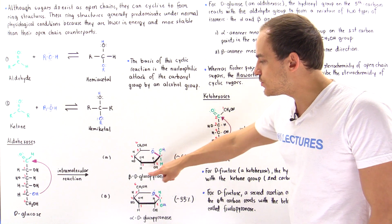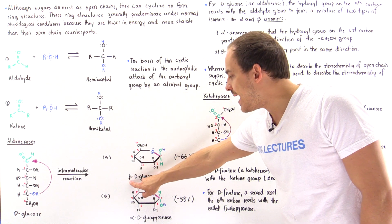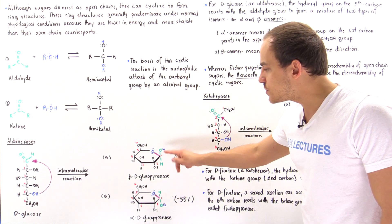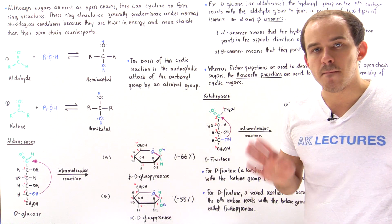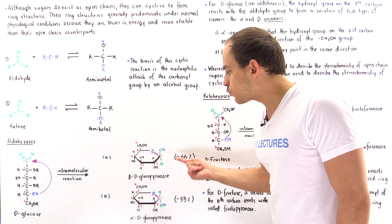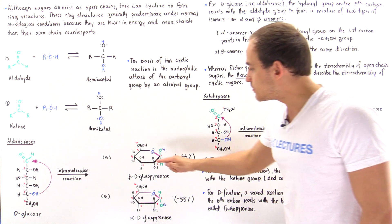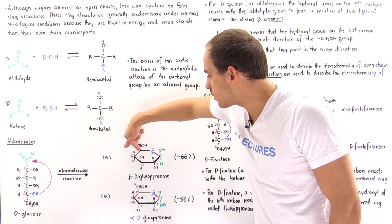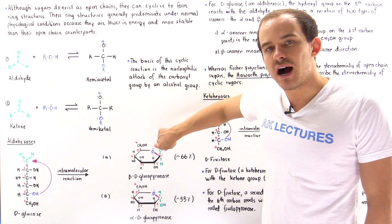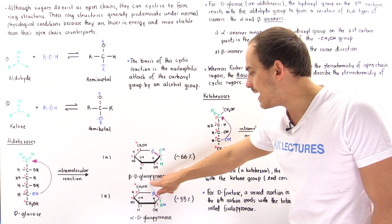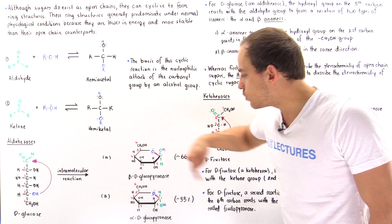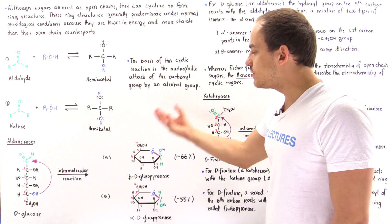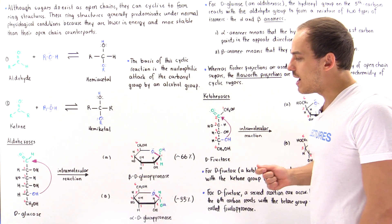Isomer A is known as beta-D-glucopyranose. We call this a pyranose because it is a six-membered ring — inside the ring we have six different atoms: carbon 1, carbon 2, carbon 3, carbon 4, carbon 5, and the oxygen. That's why we call it a pyranose. The glucose simply means we began with D-glucose, so this is the ring form of that glucose molecule.